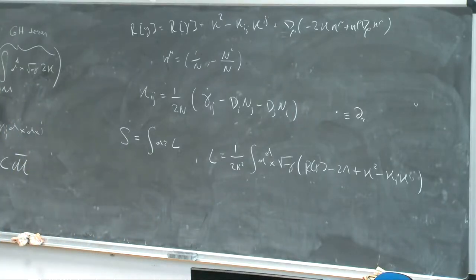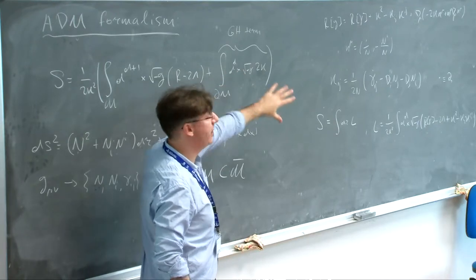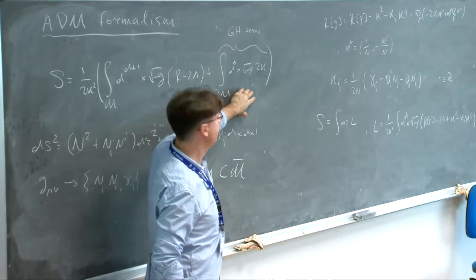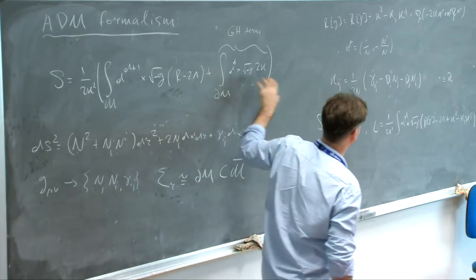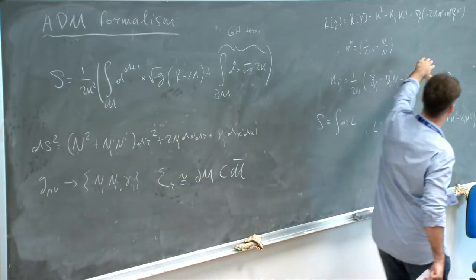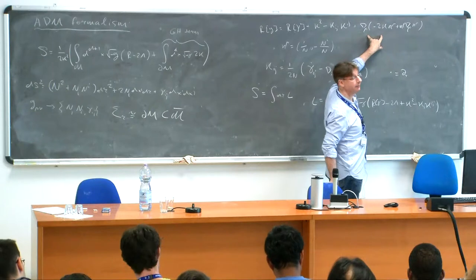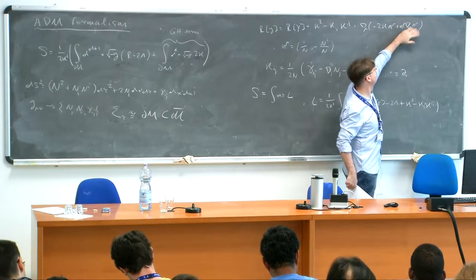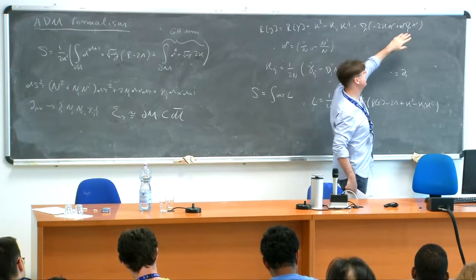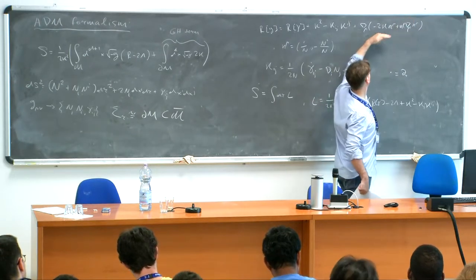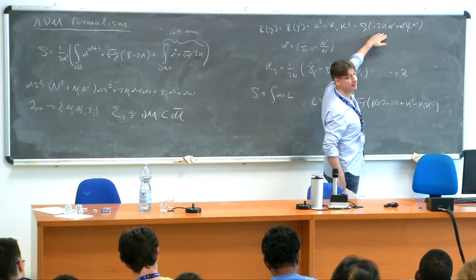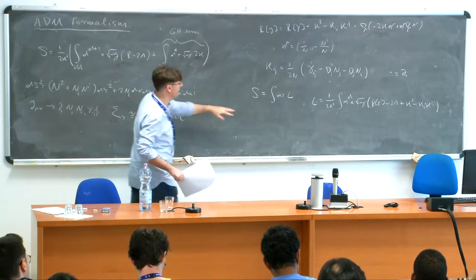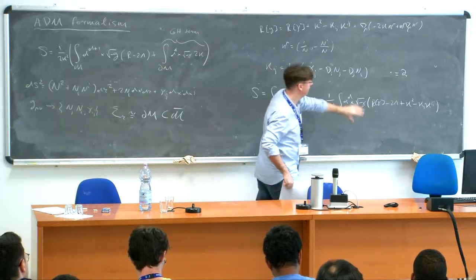Notice here that it's crucial: in order to formulate the problem in this Hamiltonian language, it's crucial to have this Gibbons-Hawking term. What this Gibbons-Hawking term does is cancel precisely this total derivative term here. If you do the calculation, you will see that once you pull it back to the hypersurface, this term is identically zero — it only cancels this term. So that's why you can write it as an integral over this Lagrangian density.